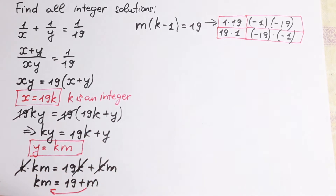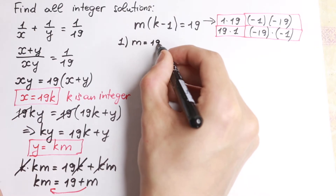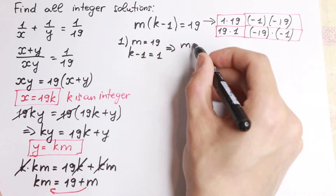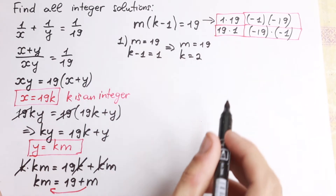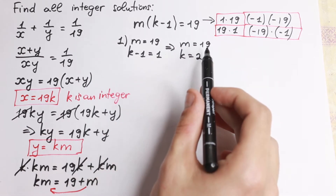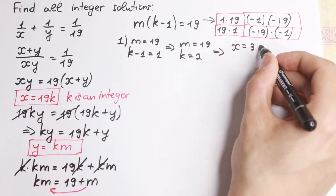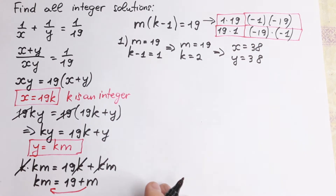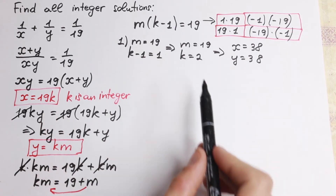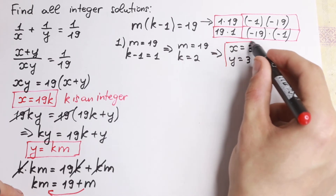We have four expressions to consider. For the first case, m equal to 19 and k minus 1 equal to 1. So m equals 19 and k equals 2. Using our substitutions y equal to km and x equal to 19k, we get x equal to 38 and y equal to 38. This is our first pair of solutions: (38, 38).